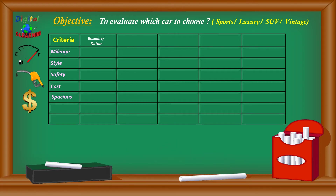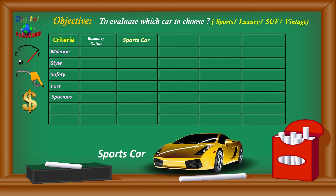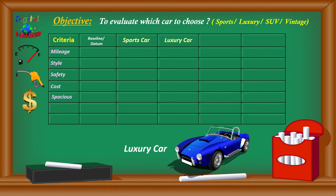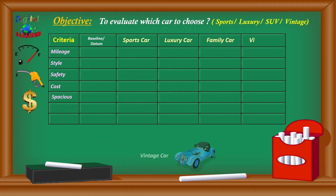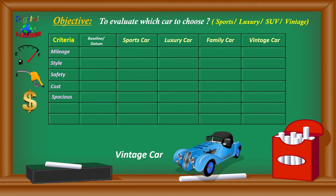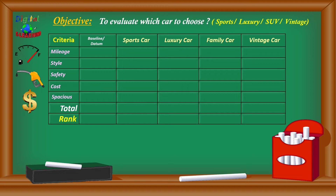Next, we define our options or alternatives: first is the sports car, second is the luxury car, third is the family car, and fourth is the vintage car. These are listed in the top horizontal row. The last two rows are for total and rank. We give the baseline a score of zero as our initial benchmark, and will compare all concepts against it.